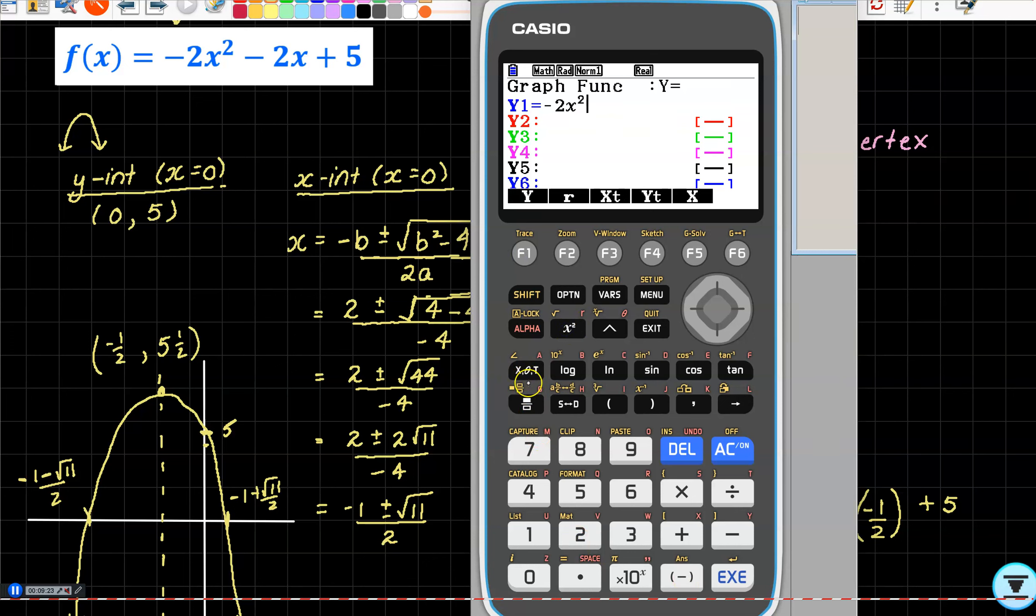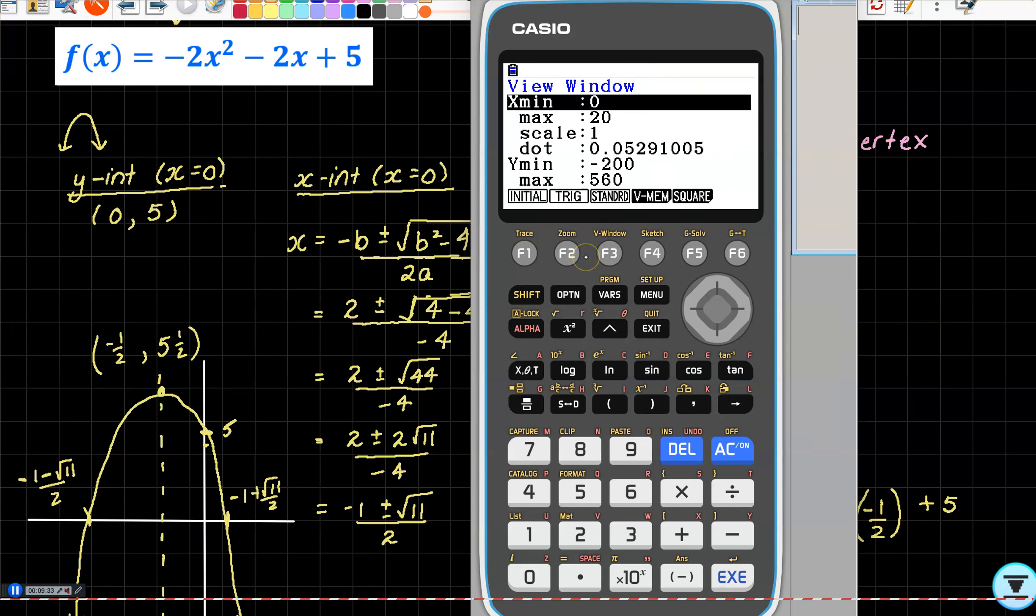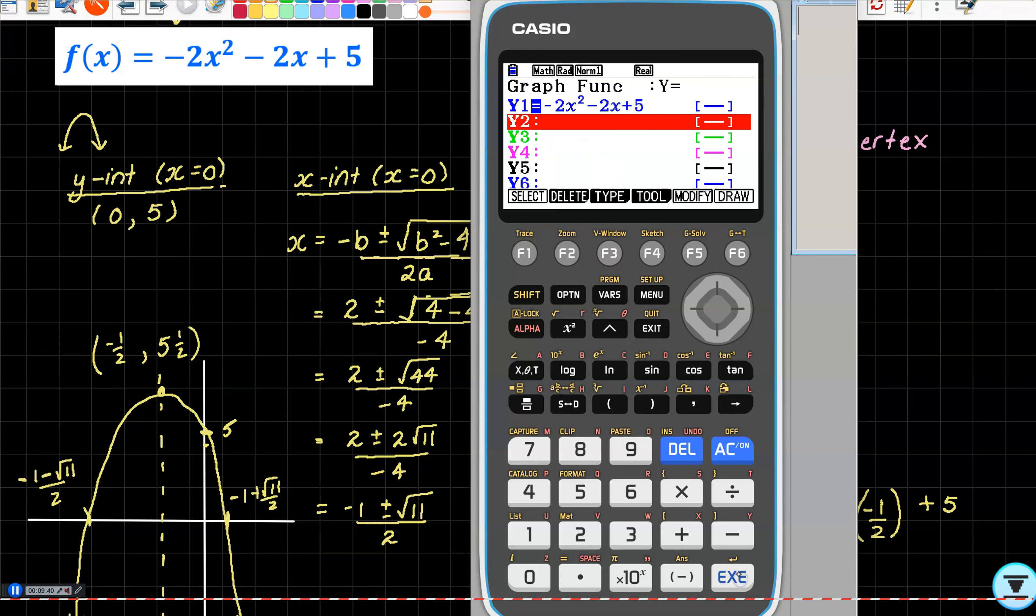Go to Type and we want to press F1 Y=. So it happens a lot. -2x² - my x value is underneath the alpha - 2x + 5. We press enter. I'm going to go Shift F3 to change or make sure my view window, my axes, are standard. So press F3 again: -10 to 10, enter, enter.